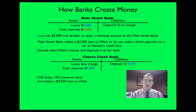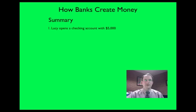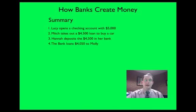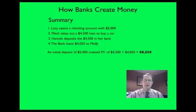Step four: Cherry Creek Bank keeps ten percent as the reserve ratio and makes a four-thousand-fifty-dollar loan to Molly. So to recap: Lucy opened a checking account with five thousand dollars. Mitch took out a forty-five-hundred-dollar loan to buy a car. Hannah deposited the forty-five hundred dollars in her bank, which was then able to loan Molly four thousand fifty dollars — keeping four hundred fifty dollars in reserves. That initial deposit of five thousand dollars from Lucy actually created additional M1 money supply of eighty-five hundred and fifty dollars, through Mitch's loan and Molly's loan.